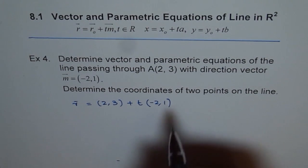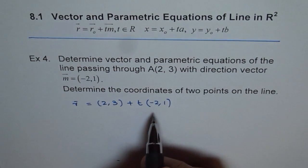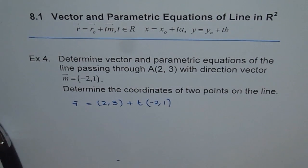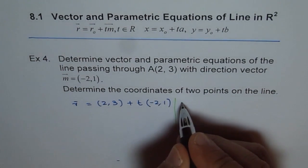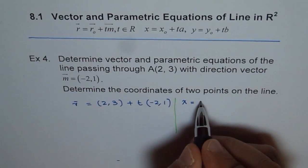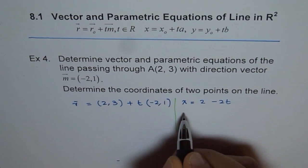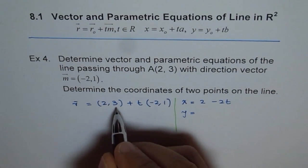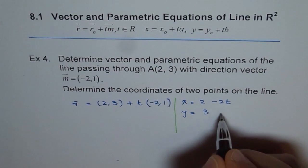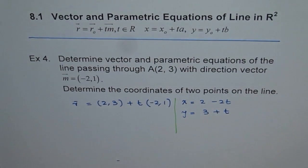Now, parametric equation is writing this in a different form. So we will write parametric equation and say X equals X₀ is 2 minus 2T and Y equals 3 plus T. That's how we get the parametric equation.